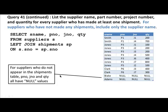For suppliers who do not appear in the shipments table, everything else is null. I have taken time to explain the concept of outer join. You really should try to understand this because there are many times when we want to retrieve information for which an outer join becomes essential.